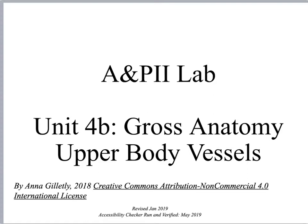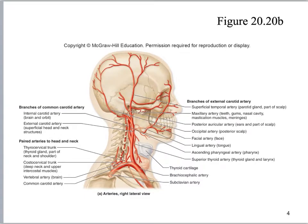Welcome, this is Anna Galetly and we are going to start talking about the next part in Unifor, which is the gross anatomy of your upper body blood vessels. You have a lot of different pictures you can use for helping you identify these blood vessels. Please remember to use the terms list and only memorize the ones that you're actually going to be tested on. This picture has way more on it than you actually need.